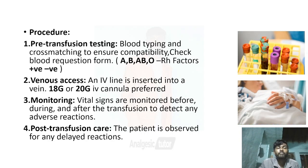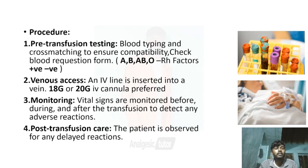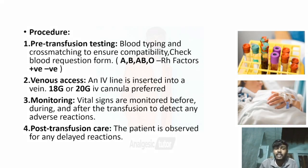We have mainly four blood groups: A, B, AB, and O, and two Rh factors — positive and negative. For any blood transfusion, the same blood group and same Rh factor are mandatory. Vascular access — an IV line is inserted into a vein for rapid flow of blood during transfusion.